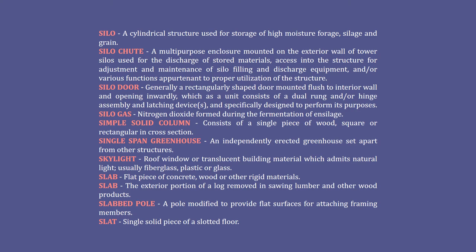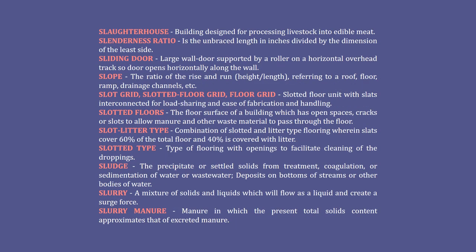Skylight: roof window or translucent building material which admits natural light — usually fiberglass, plastic, or glass. Slab: flat piece of concrete, wood, or other rigid materials. Slab (alternate): the exterior portion of a log removed when sawing lumber and other wood products. Slab pole: a pole modified to provide flat surfaces for attaching framing members. Slat: single solid piece of a slotted floor. Slaughterhouse: building designed for processing livestock into edible meat.